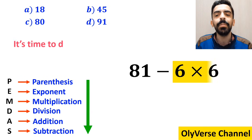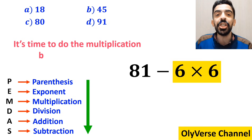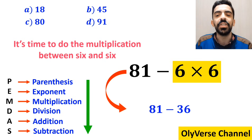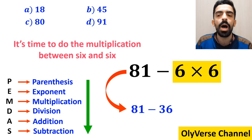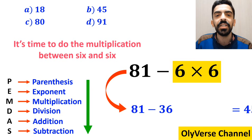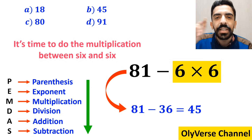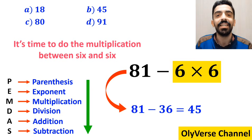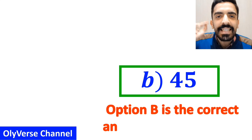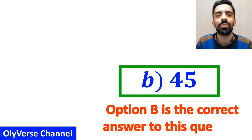Now it's time to do the multiplication between 6 and 6, which gives us 81 minus 36. And finally, the value of this expression is equal to 45. That's great! Option B is the correct answer to this question.